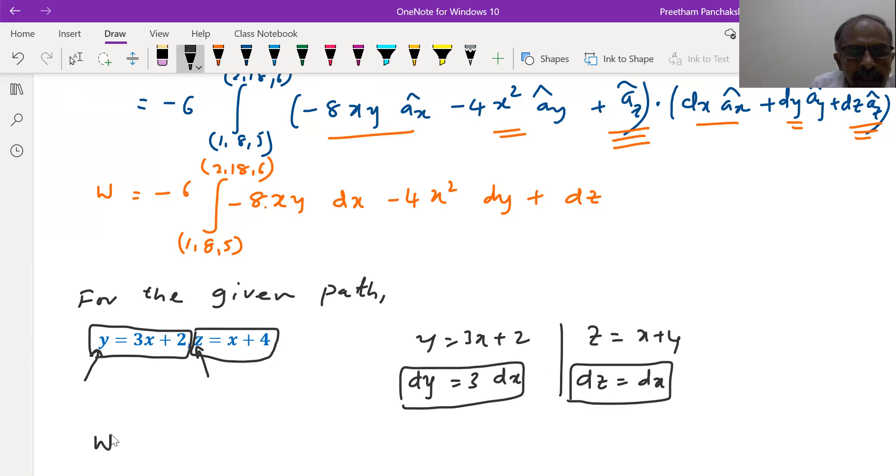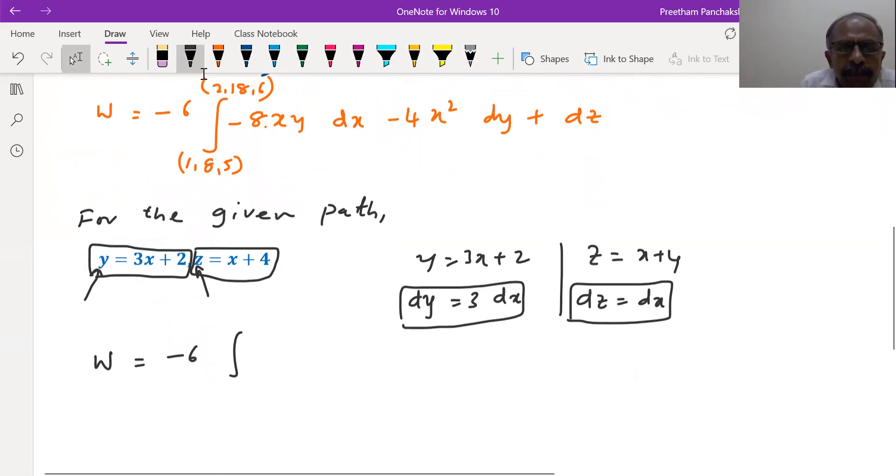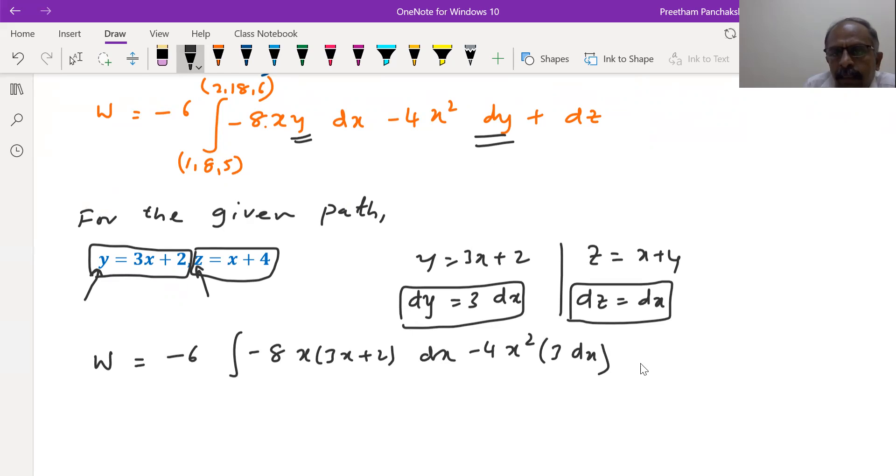What I say is W is equal to minus 6 integral of this equation. Wherever y and z are present, we shall use the given relations. So here minus 8, x let it be there. We shall substitute for y, so y is 3x plus 2 into dx minus 4 x square, in place of dy here we shall write 3 into dx plus, so here is dz, that becomes now dx. You can observe that all the terms are in the form as a function of x only.